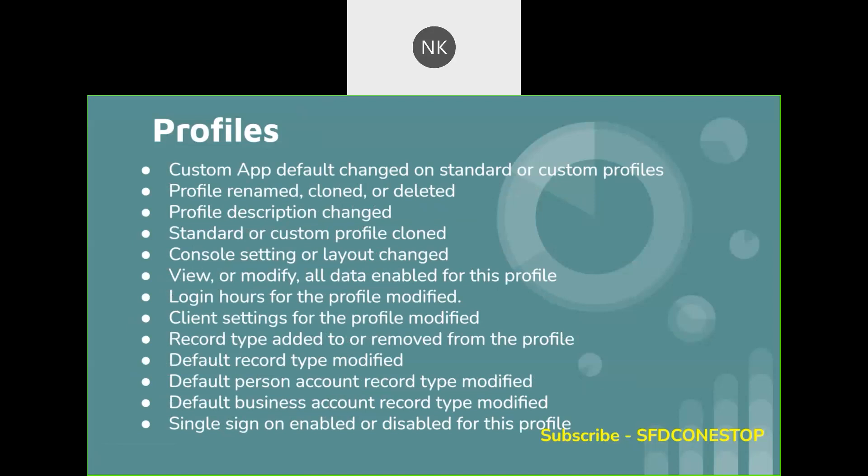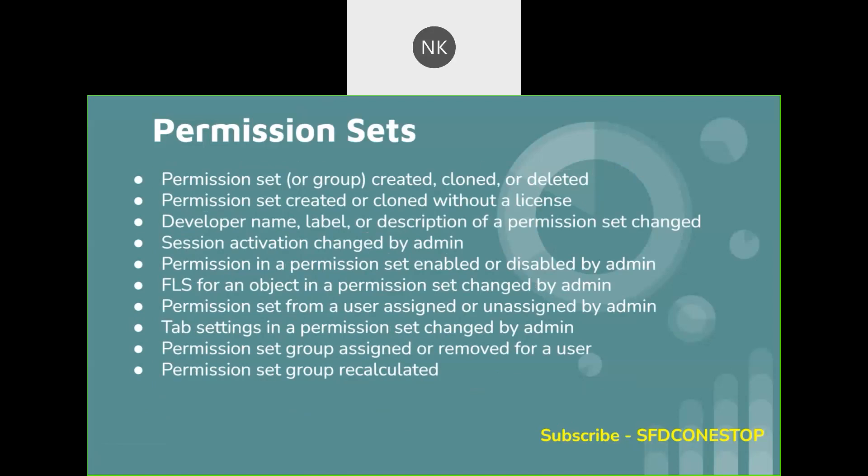Under permission sets, if you are creating a new permission set, cloning a permission set, or by mistake you deleted a permission set, that is also something which can be tracked using the Setup Audit Trail. You can download the Setup Audit Trail CSV file and there you will know who deleted the permission set, at what time the permission set was deleted, and a lot of other information can be found in that download file.